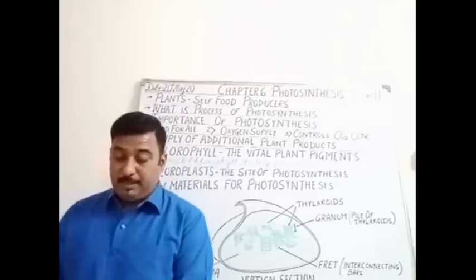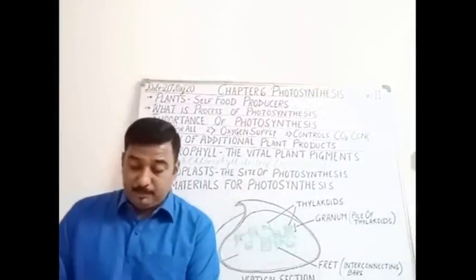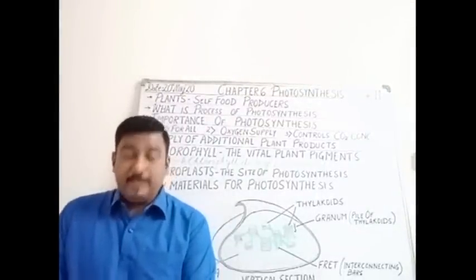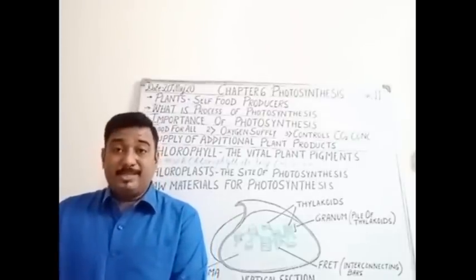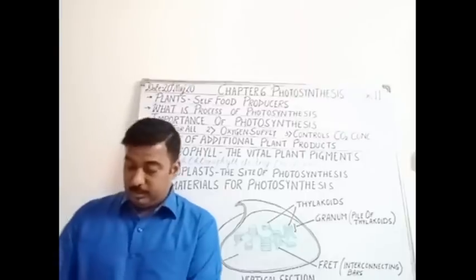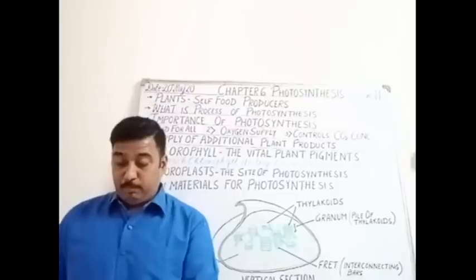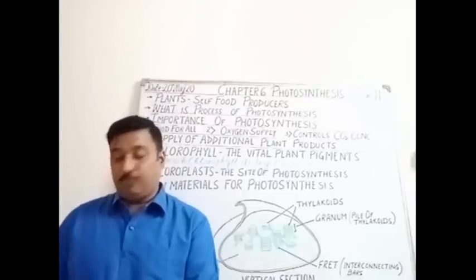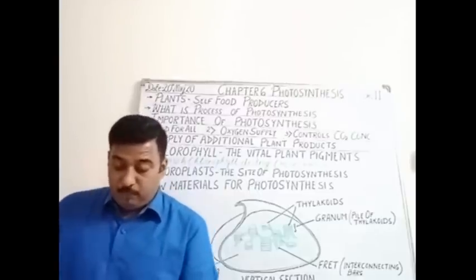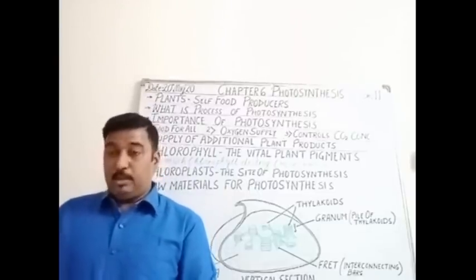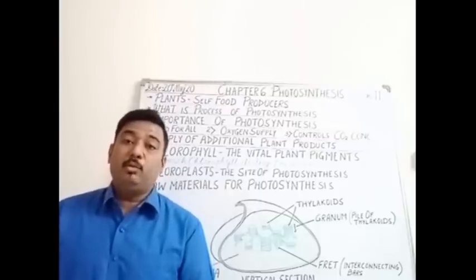In today's session we will be giving an introduction about the chapter. The things I'll be explaining today include the process and definition of photosynthesis, what is chlorophyll, what is chloroplast, what are the raw materials for photosynthesis, and how the regulation of stomatal opening for letting in carbon dioxide — the opening and closing of stomata — takes place.